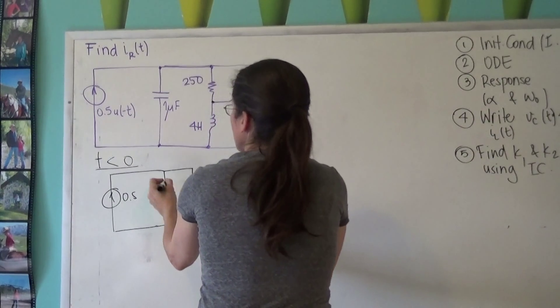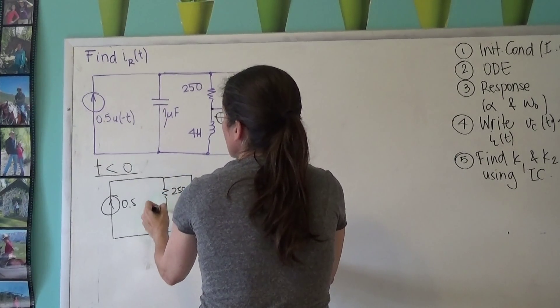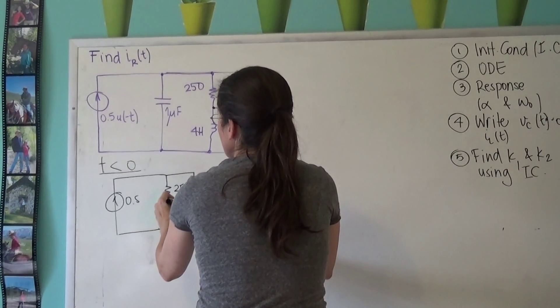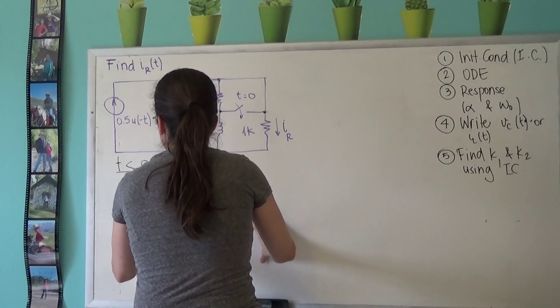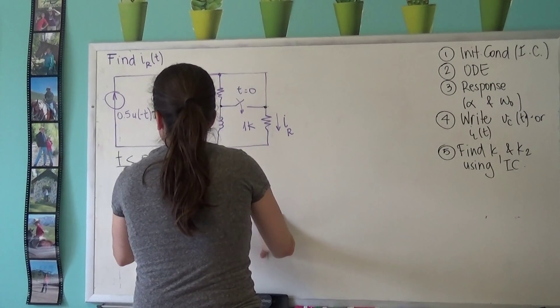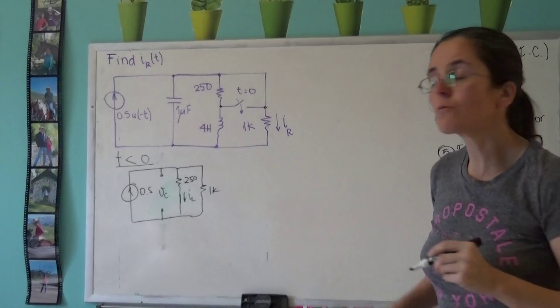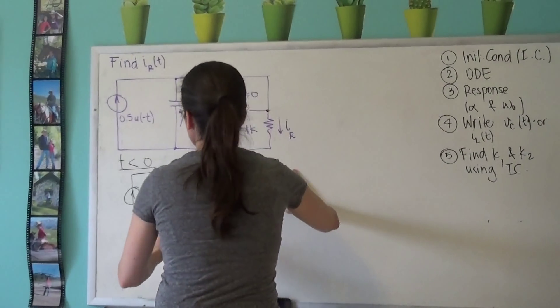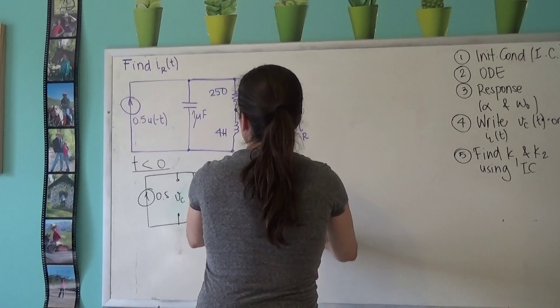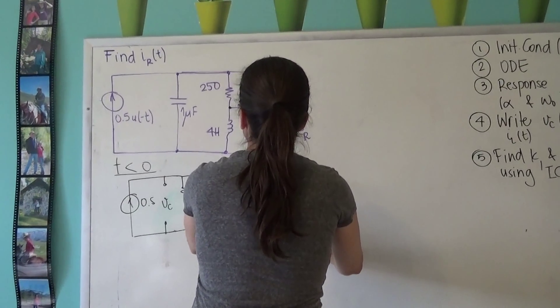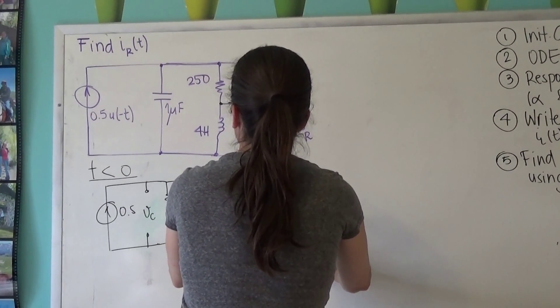So I have a 1 kilo ohm here, a 250 ohm here. This is the current through the inductor. And this is VC, the voltage on the capacitor. So these two are going to be my two first initial conditions. So VC of zero and IL of zero.